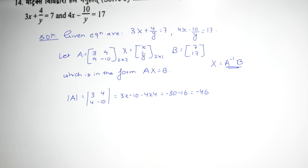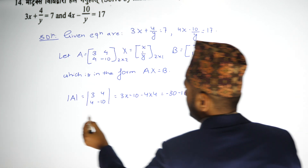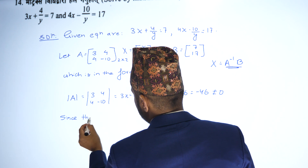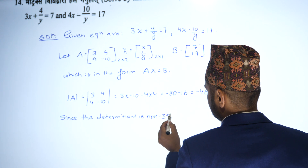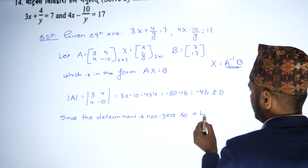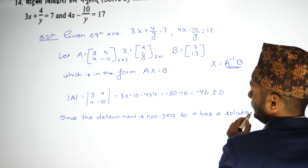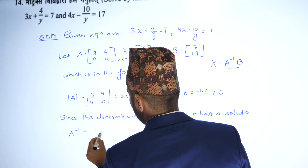Since the determinant is non-zero, the solution is possible. The solution of the linear equations can be solved directly. Since the determinant is non-zero, A inverse exists, and it has a unique solution. A inverse equals 1 by determinant of A.